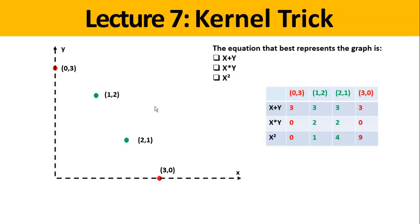If we look at the results of each equation: for x plus y it gives us 3 for all points. On the other hand, x squared gives us 0, 1, 4, and 9. But if you look at the product x times y, it gives us 0 for the red points and 2 for the green points — that's what we were looking for. An equation that gives big values to the green points and smaller values for the red points, or vice versa. So we're going to use this equation — that was the right answer.